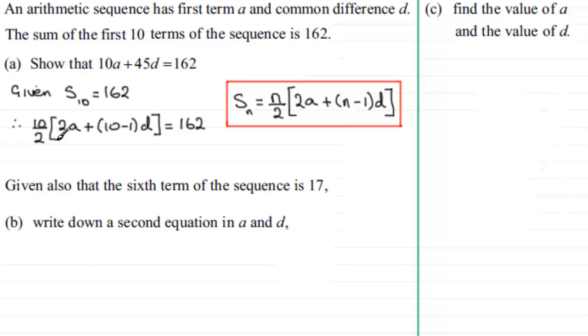Now we can simplify this because 10 divided by 2 is 5, and all we've got to do is expand the bracket. If we do that, 5 times 2A is therefore going to give us 10A.